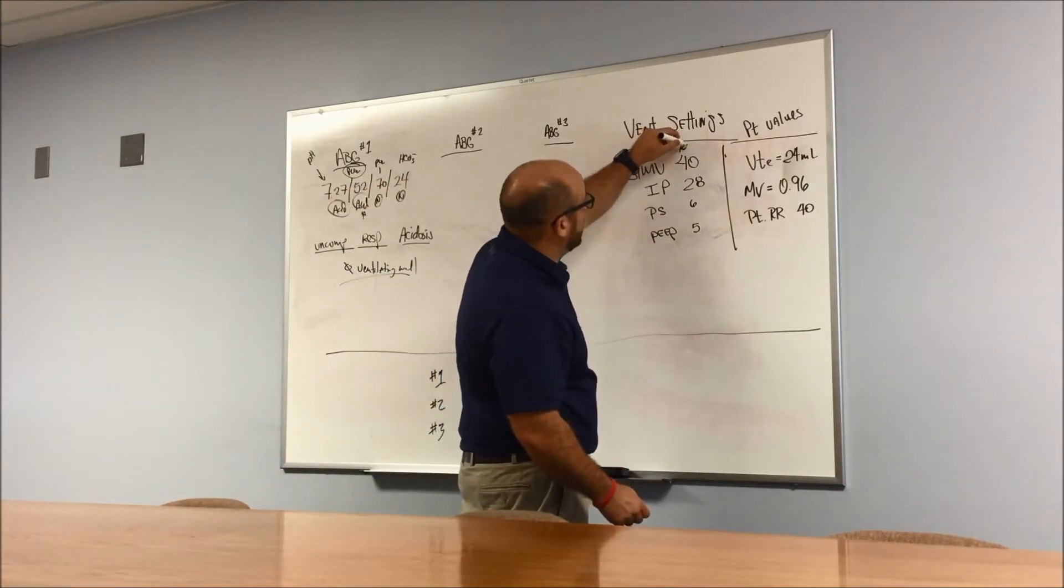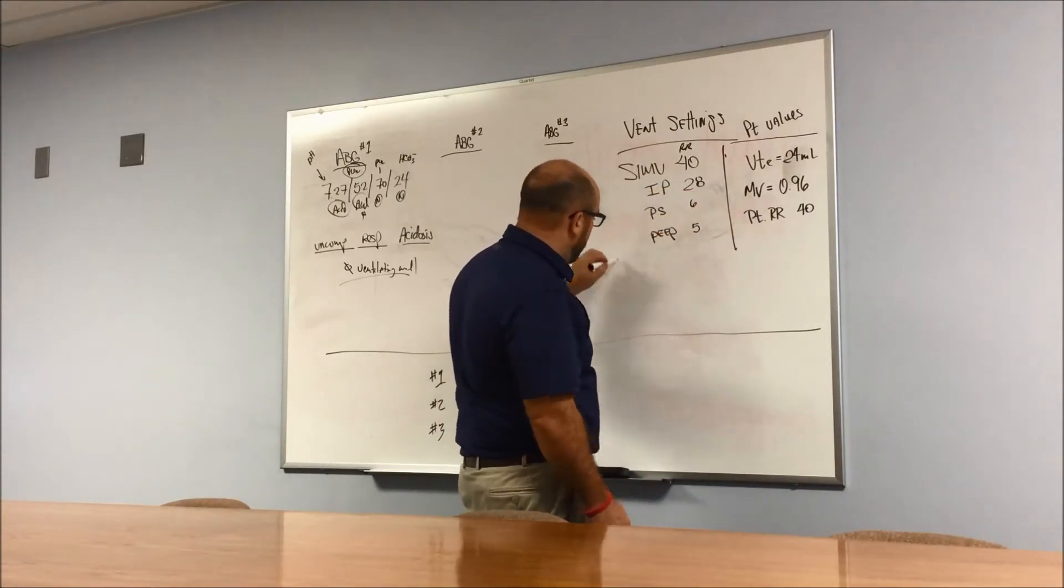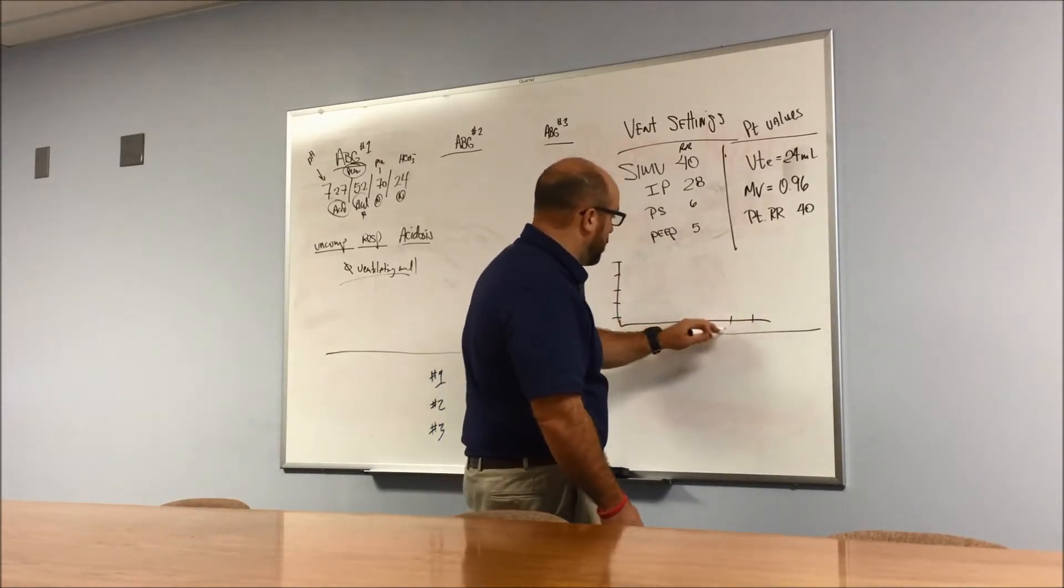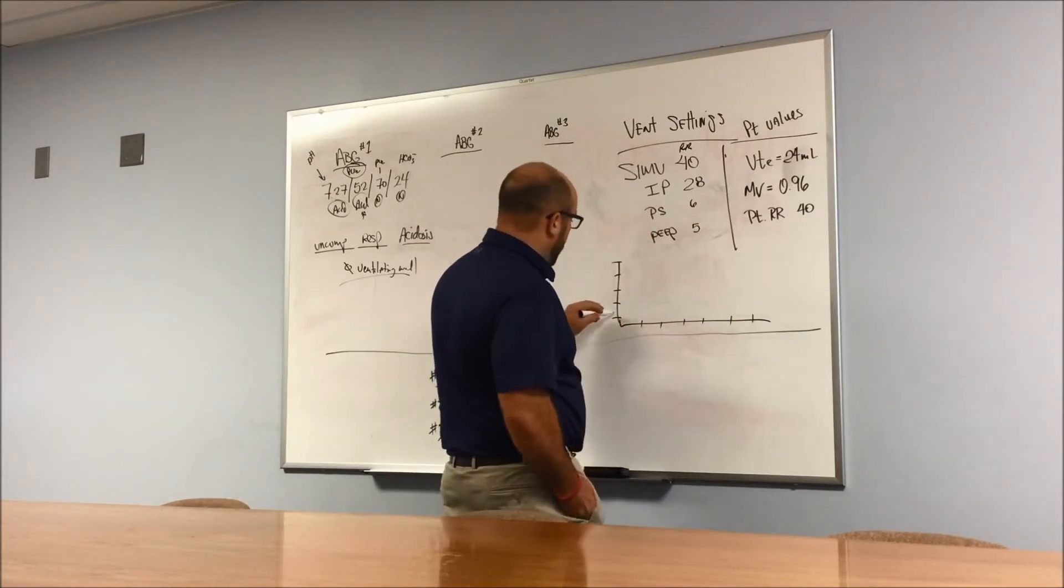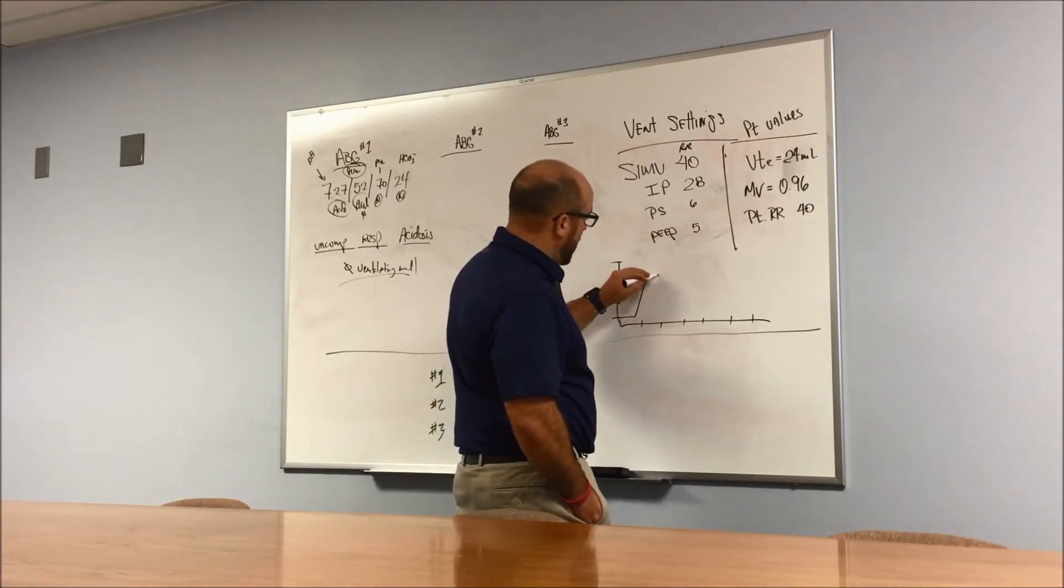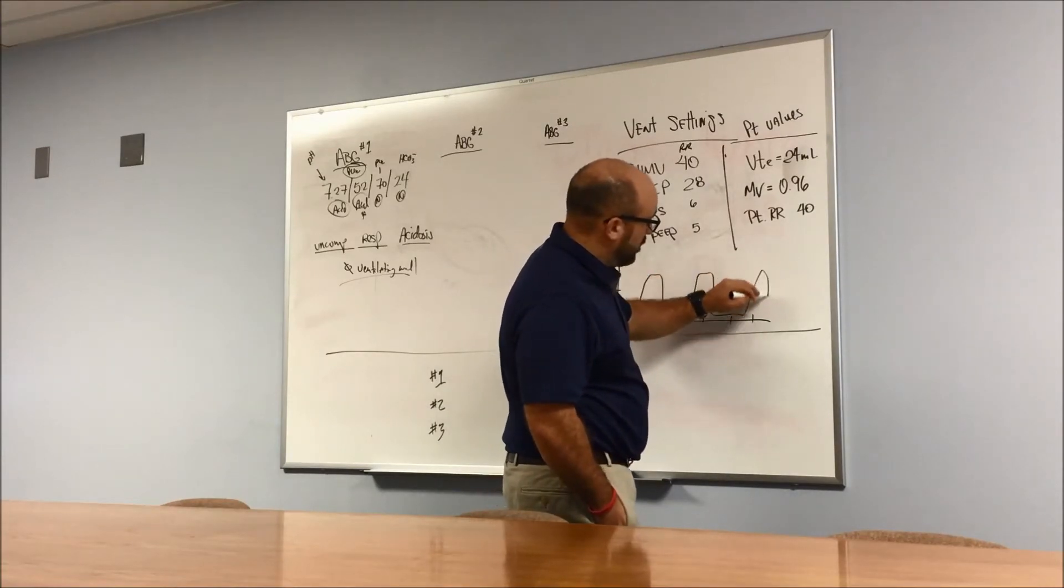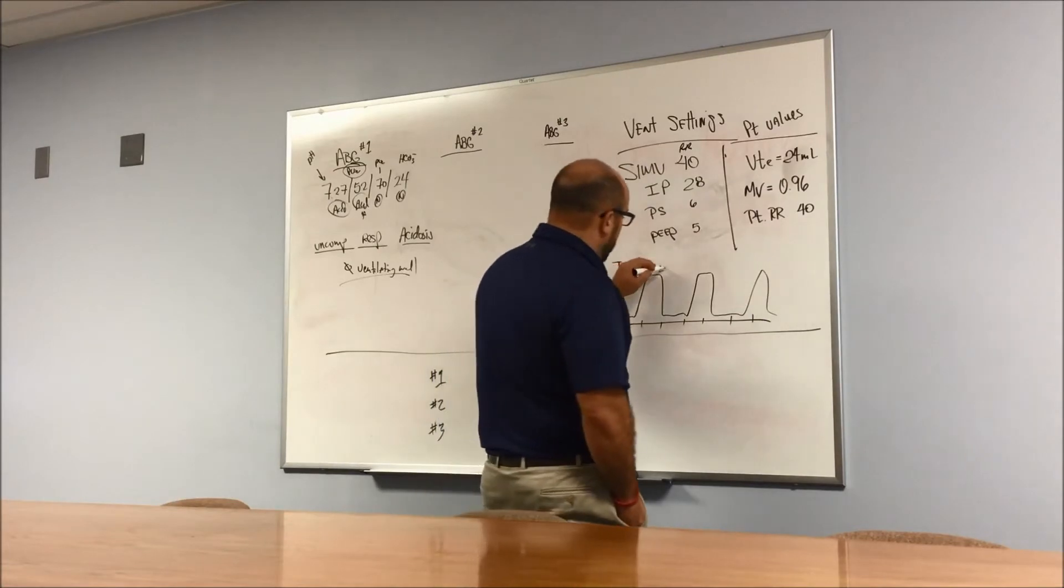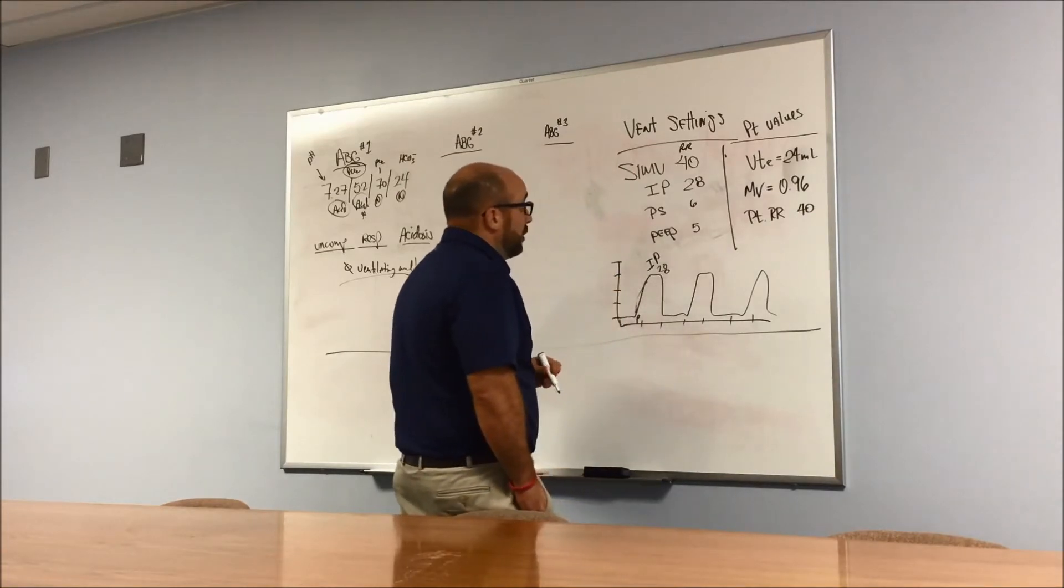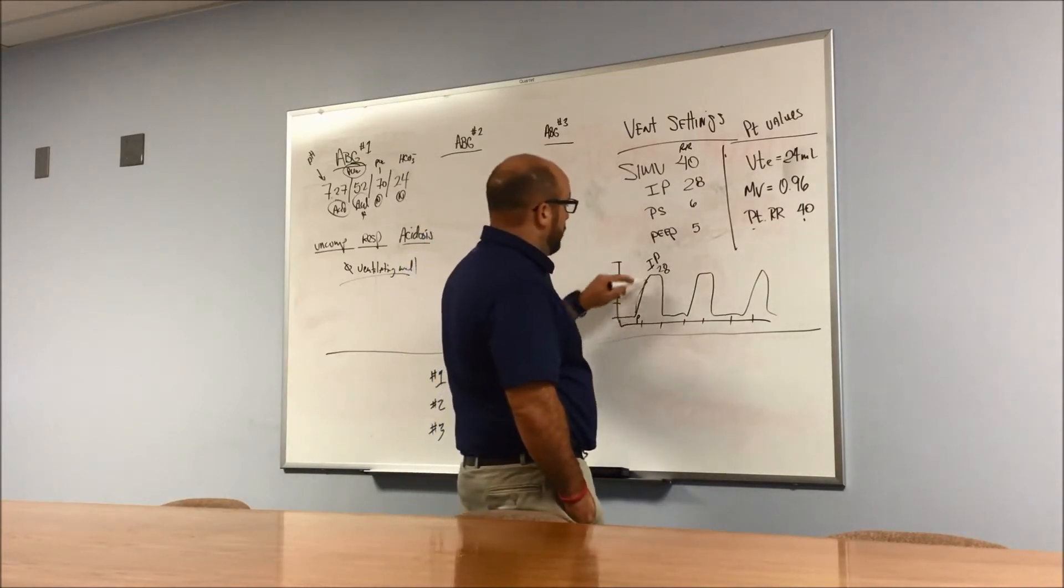Let's go over to the vent settings and look at some ventilatory type of parameters. Here's our vent settings: SIMV, respiratory rate of 40, inspiratory pressure of 28, pressure support of 6, and PEEP of 5. Since I'm a guy, I like to draw pictures. Let's draw this quick picture of a scalar waveform for this vent we're going to run in. Let's say this is 5 right here, 40 times a minute. We're going to trigger, we're going to go up to 28 and come back down, 28 and come back down, 28 and come back down.